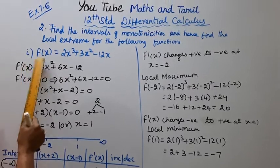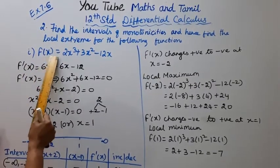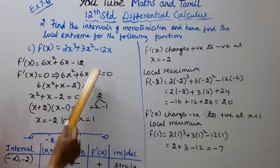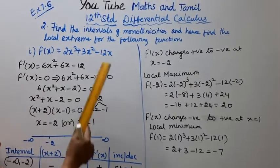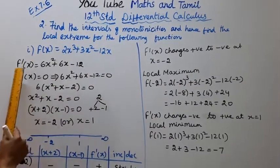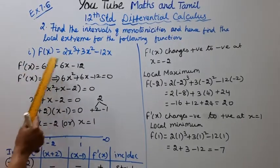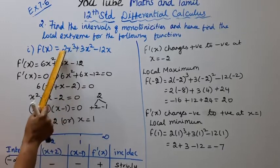First question, f of x equal to 2x cube plus 3x square minus 12x. This is how to find f dash of x. 2x cube plus 2, 6, 1 power x square.